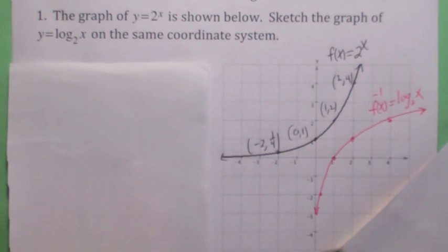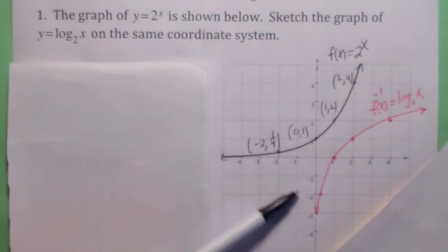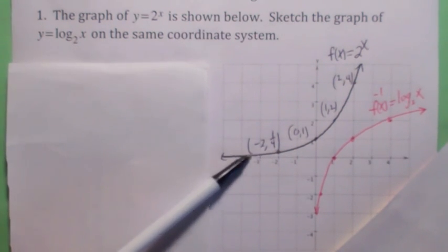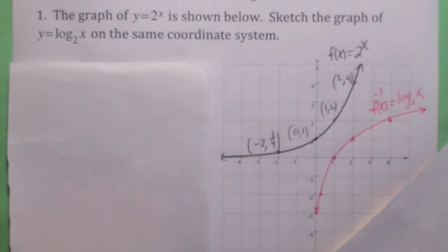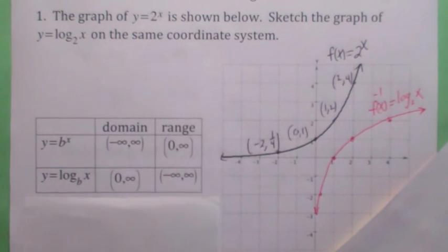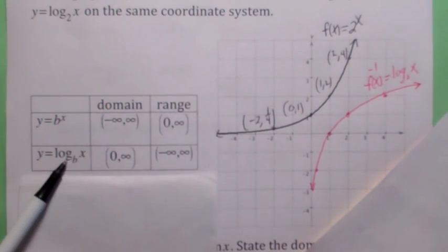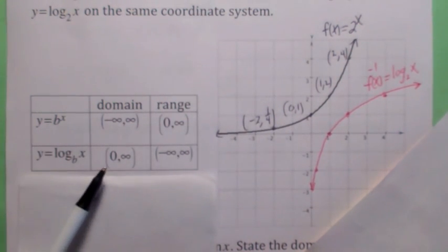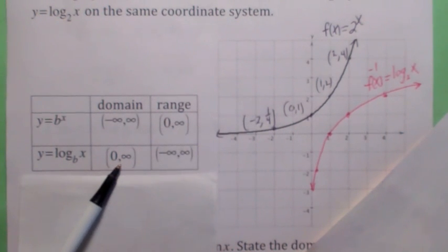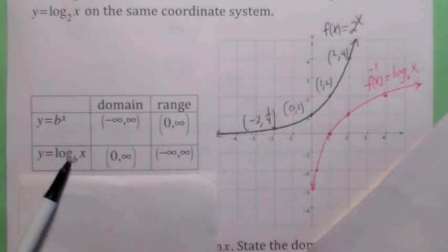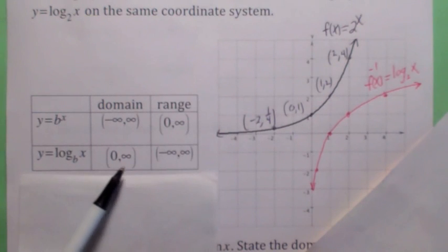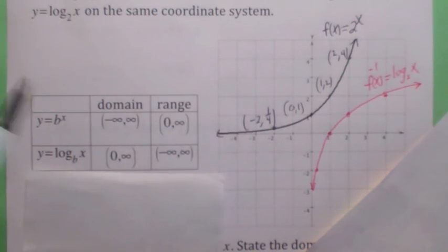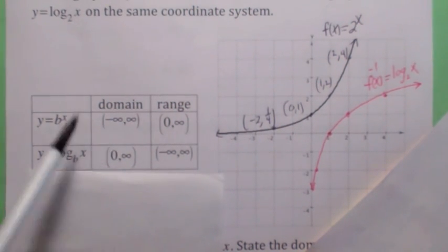What do you notice? First of all, it has a vertical asymptote on the negative y-axis, because 2 to the x has a horizontal asymptote along the negative x-axis. The domain and range of log base 2 of x — just like any log function — you switch the domain and range of the exponential function. That's why the domain of any log function is 0 to infinity. You can only take the logarithm of something greater than 0, and the range will be negative infinity to infinity.